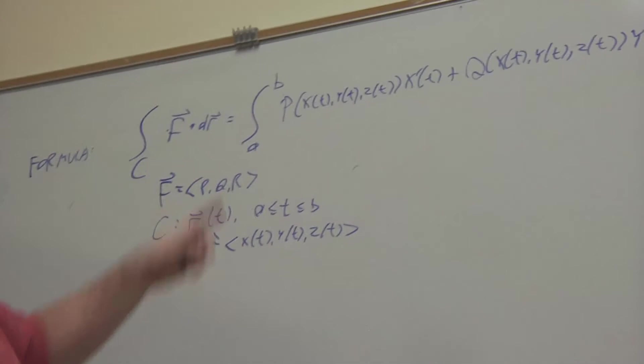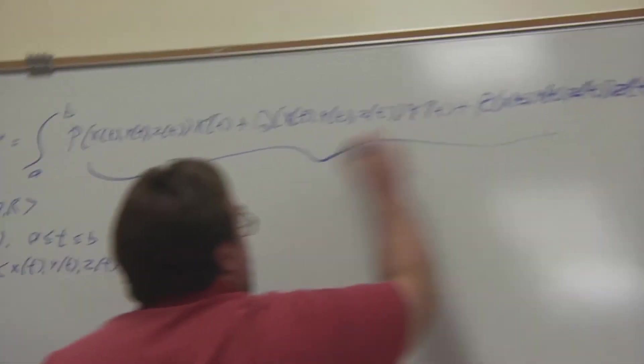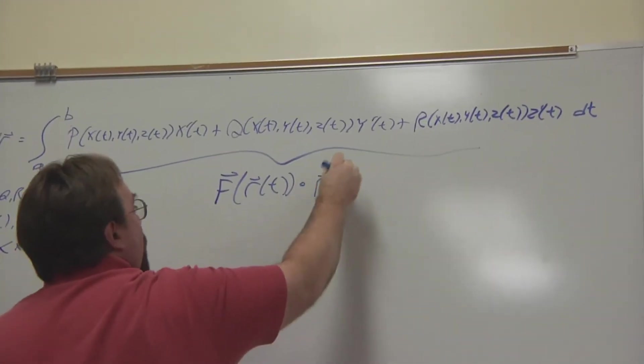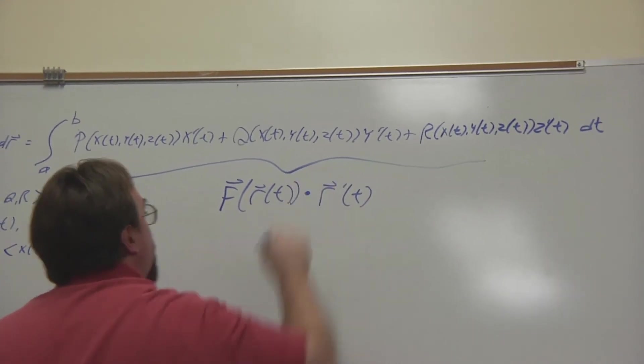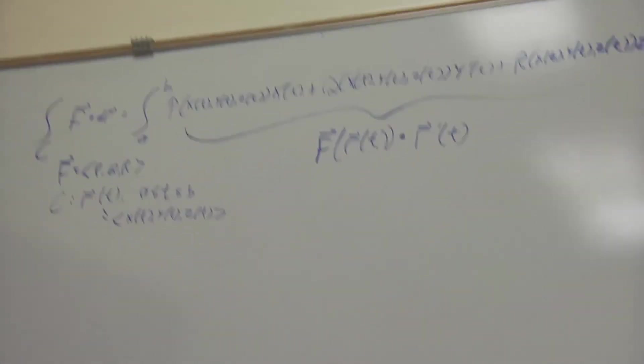So, so that's the formula we're going to use. So it's, so this whole thing is vector field evaluated at R of T dot product with R prime of T. Okay. In this case here, given the parametrizations.